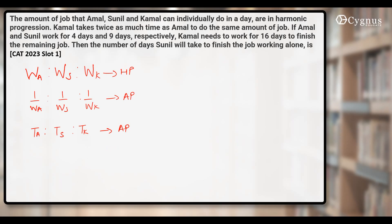Since the times are in AP and Kamal takes twice as much time as Amal, let Amal's time be 2x and Kamal's time be 4x. The middle term (Sunil's time) automatically becomes 3x, so 2x, 3x, and 4x are in AP.